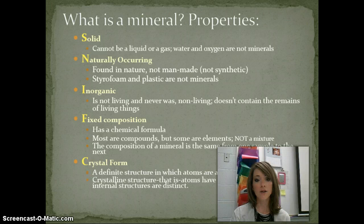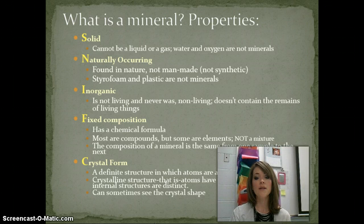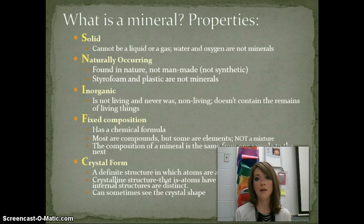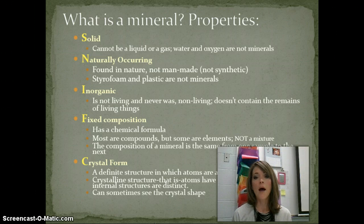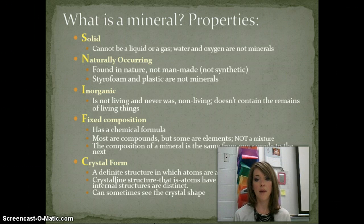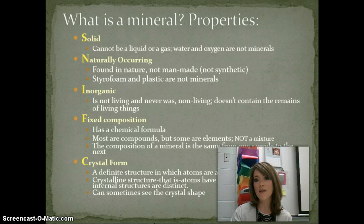Our last characteristic is that minerals have a crystal structure or crystal form. This means that when the mineral is forming, the atoms line up in a certain pattern and that pattern repeats. Sometimes you can see on the outside of the mineral the evidence of that pattern — some crystals have a cubic shaped crystal, some have a hexagonal shaped crystal. But even if you can't see it in a particular sample, all minerals have a crystal structure where their atoms arrange into a repeating pattern.